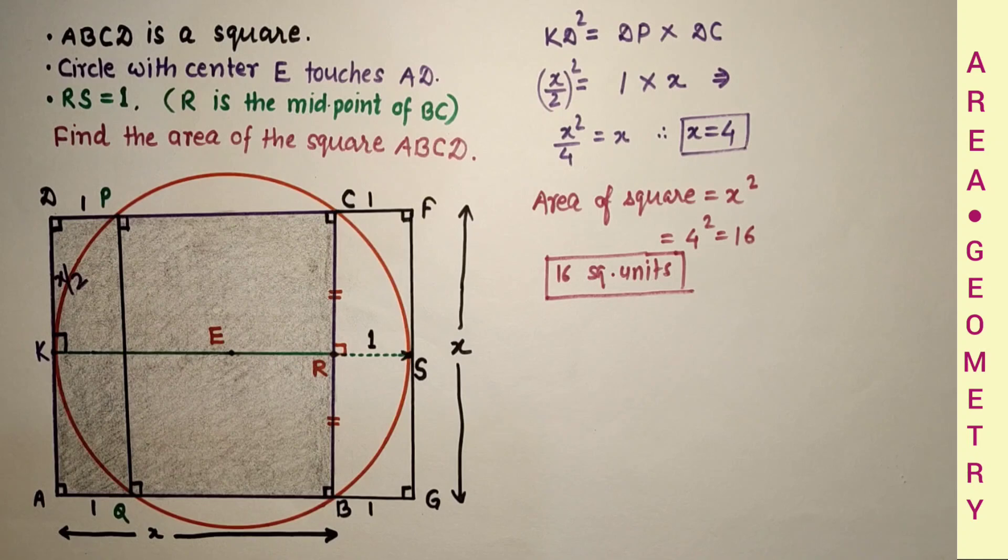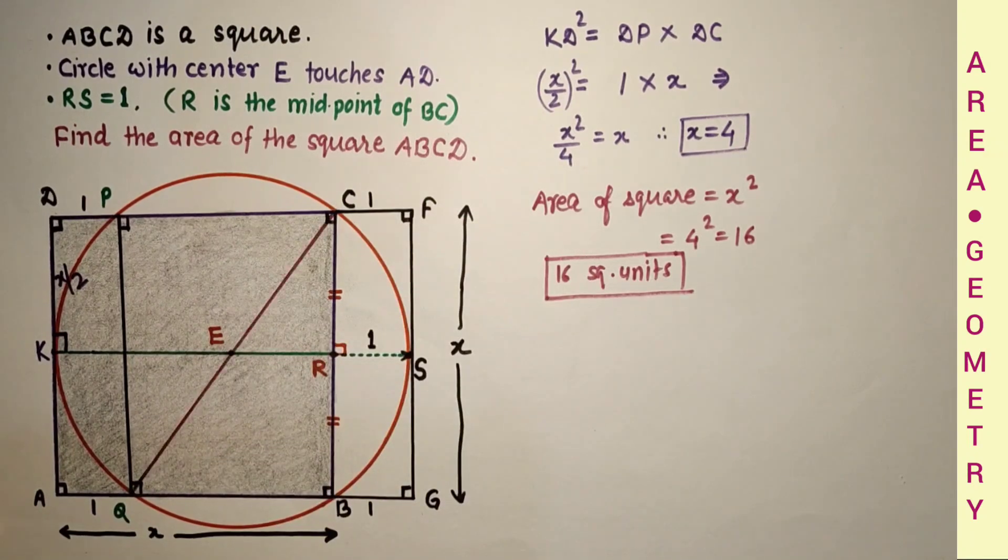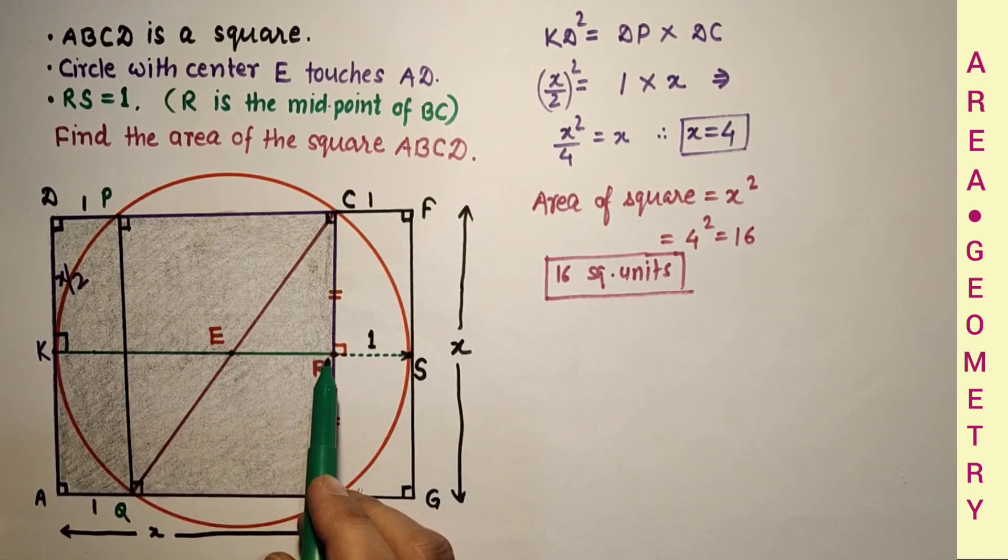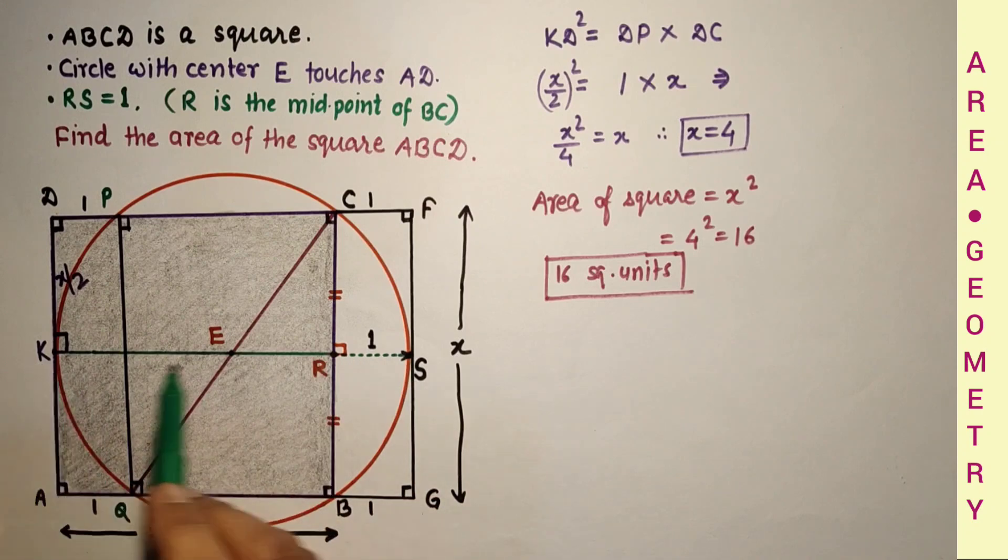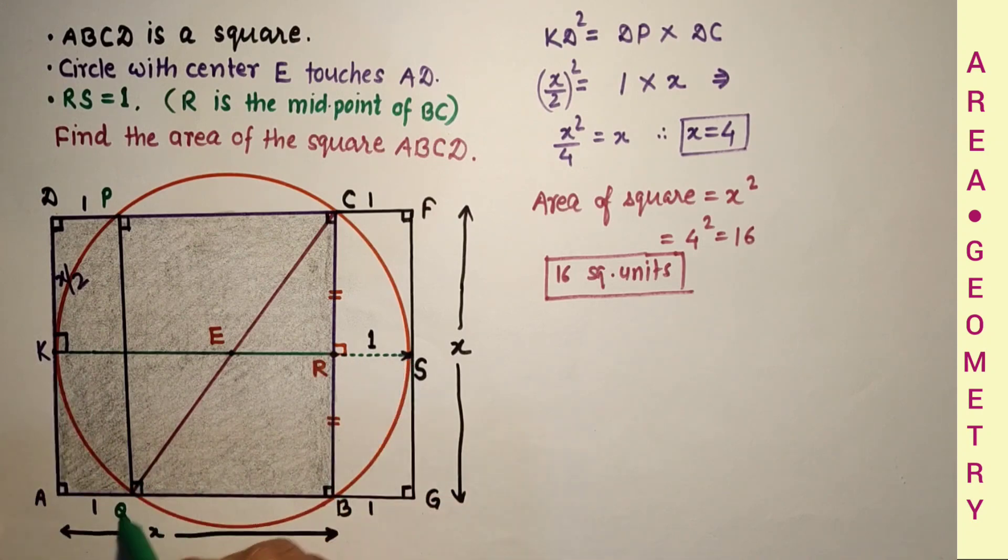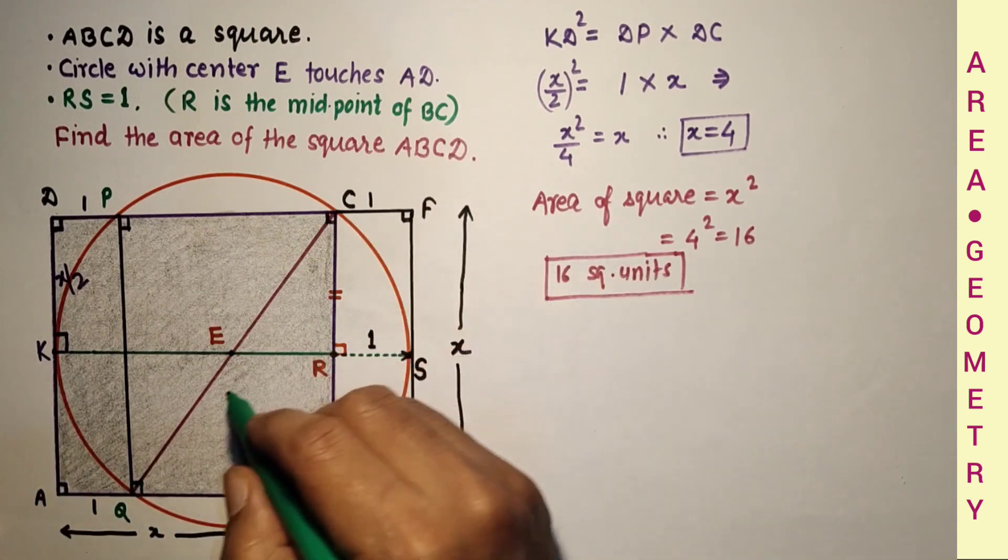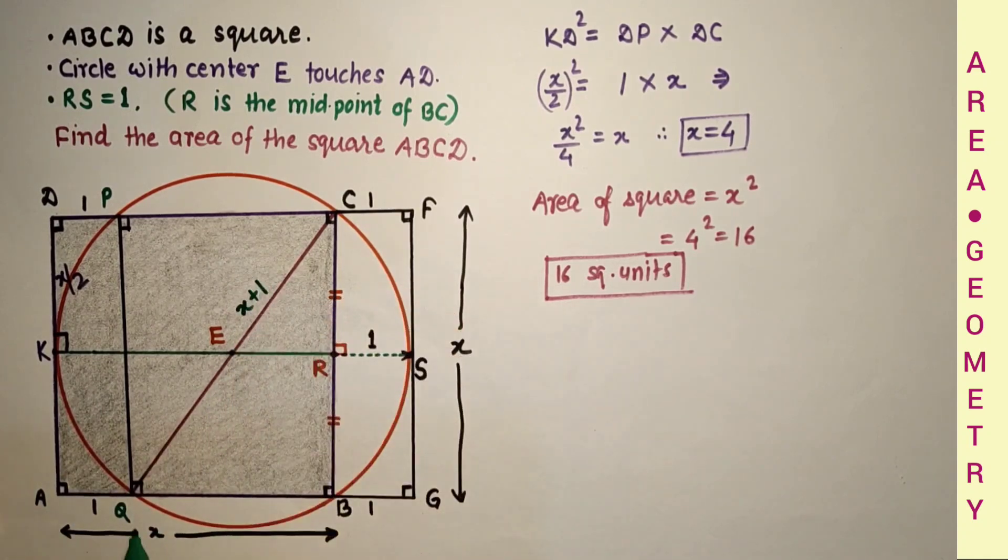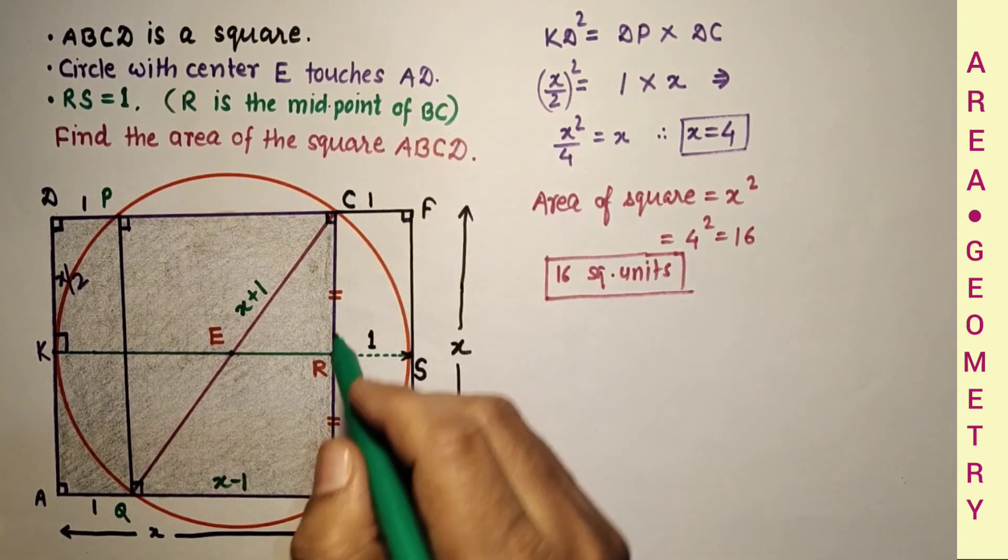Another method is if we join QC, this QC is equal to KS. KR is X and RS is 1, so KS is diameter, which is QC. So diameter is X plus 1. And from A to B it is X, A to Q is 1, so only QB is X minus 1, and BC is X.